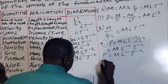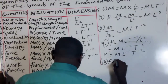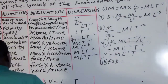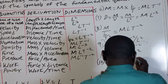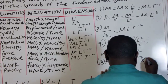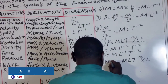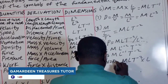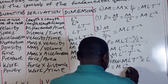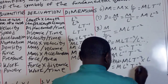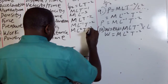Number 10 is work. The derivation of work is force times distance. Force is given by MLT raised to power minus 2, and distance is given by L. Therefore work is equal to ML raised to power 2, T raised to power minus 2.